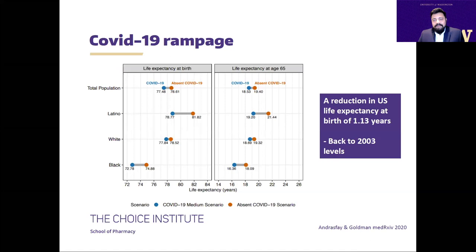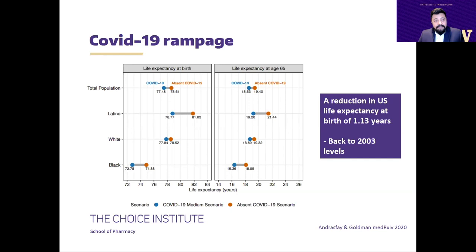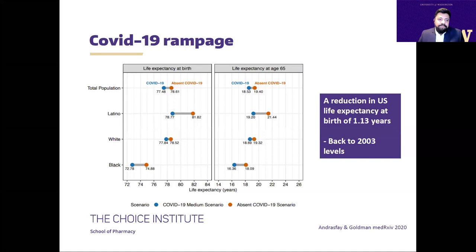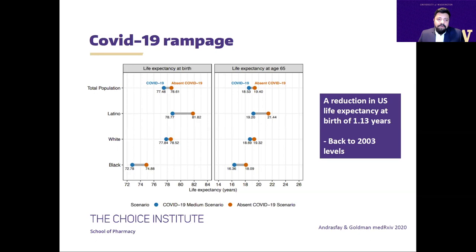COVID-19 pandemic has had a tremendous effect on human health. A recent study estimated what COVID mortality rates mean for the U.S. population, showing that COVID-19, despite being mostly fatal for older age groups, has reduced average life expectancy at birth by 1.13 years — a reduction corresponding to moving our average health back by almost two decades. These reductions are highly disparate among racial and ethnic groups, further increasing the inequalities that already existed.